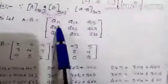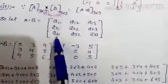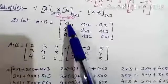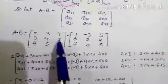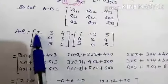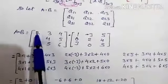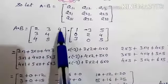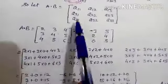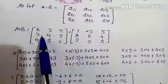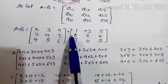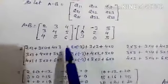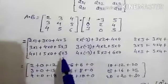Let matrix A into B have elements a11, a12, a13, a21, a22, a23, a31, a32, a33. For the first column: a11 (first row, first column) = 2×1 + 3×0 + 4×3. For a21 (second row, first column) = 3×1 + 4×0 + 5×3. For a31 (third row, first column) = 4×1 + 5×0 + 6×3.